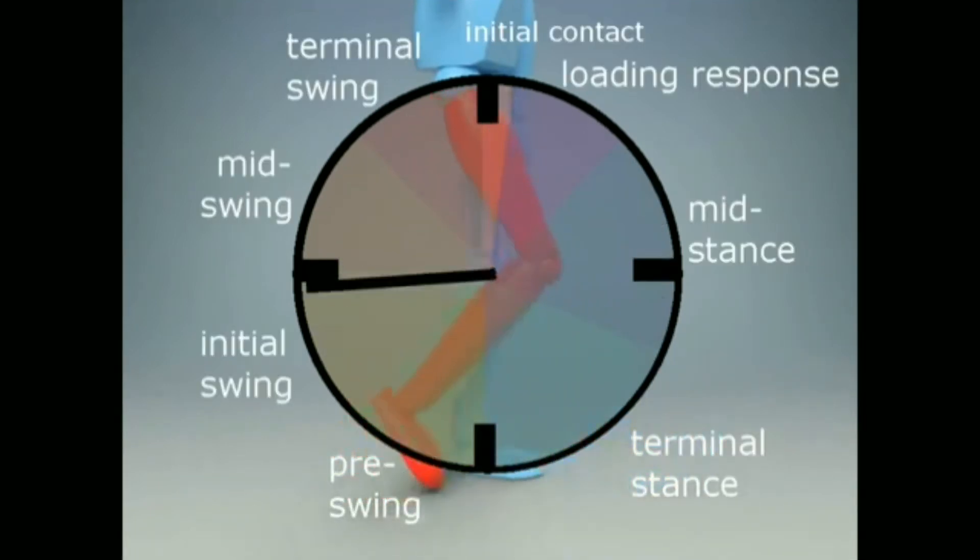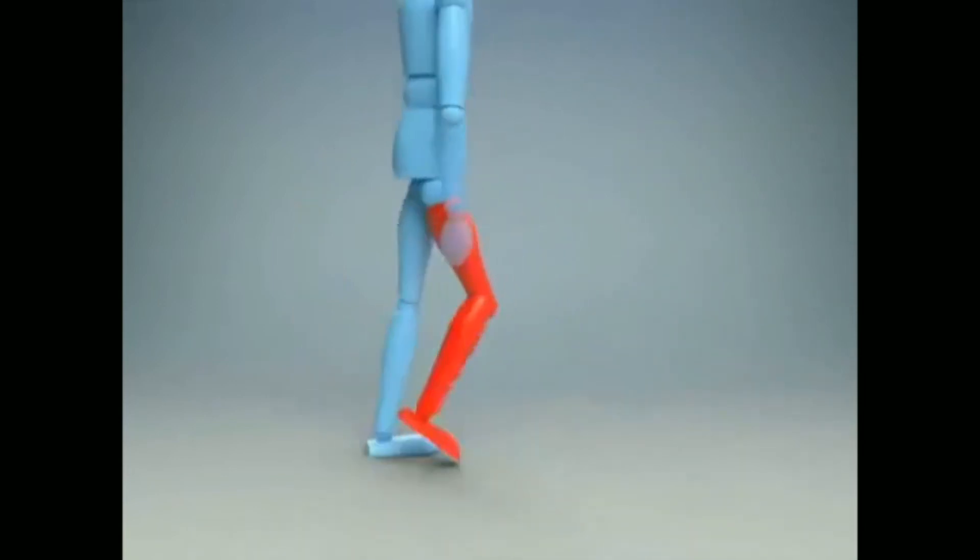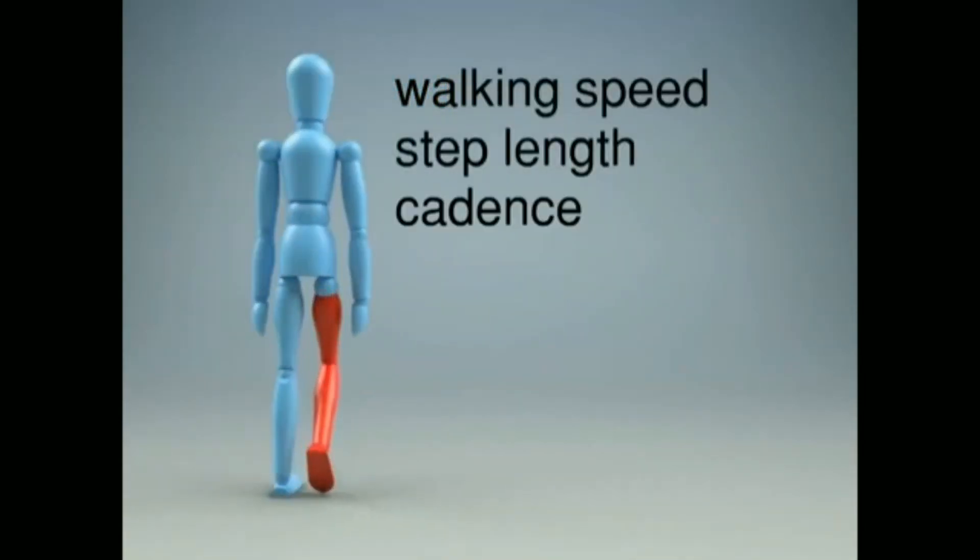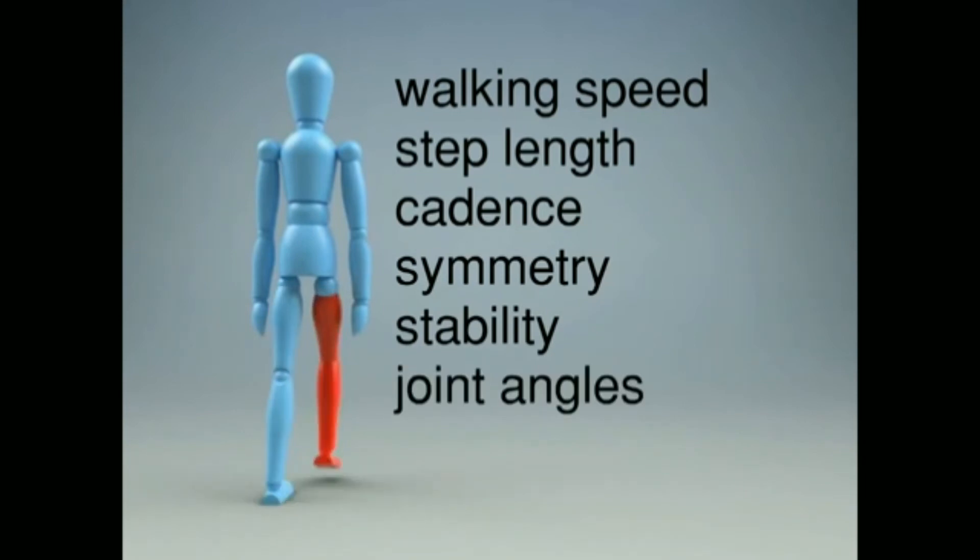By analyzing the gait cycle, we can measure things like walking speed, step length, cadence, symmetry, stability, and the angles at the hip, knee, and ankle joints. These are all helpful indicators that our patient is healthy and functioning well physiologically.